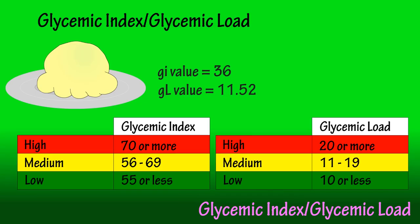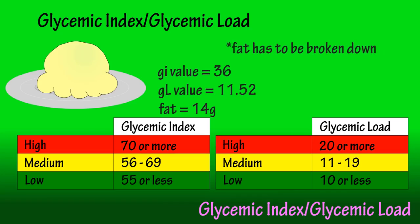But why are these numbers so low? When we look at the total profile of ice cream, we see it has 14 grams of fat and 8 grams of saturated fat in one serving. As the body digests it, the glucose release will be slower because the body has to break down the fat in addition to the carbohydrates. This gives it a lower glycemic index.